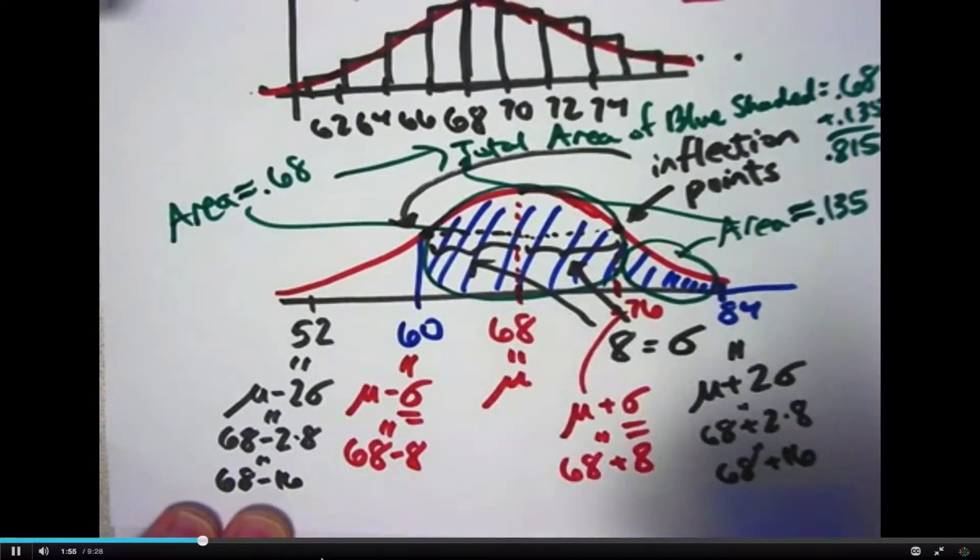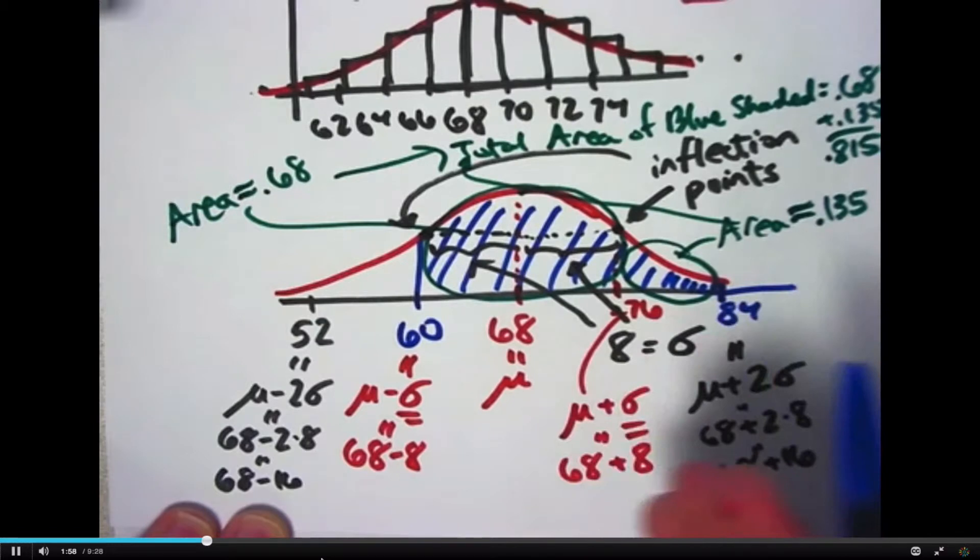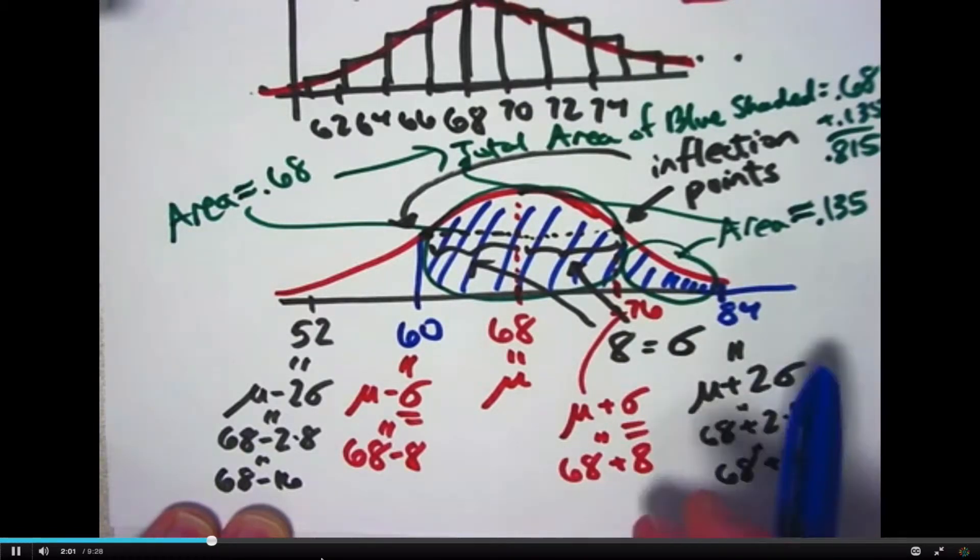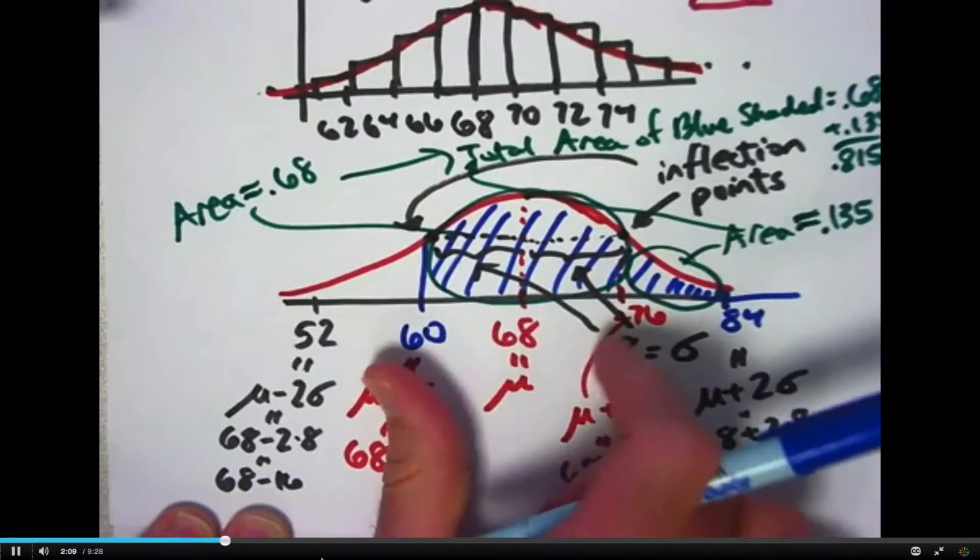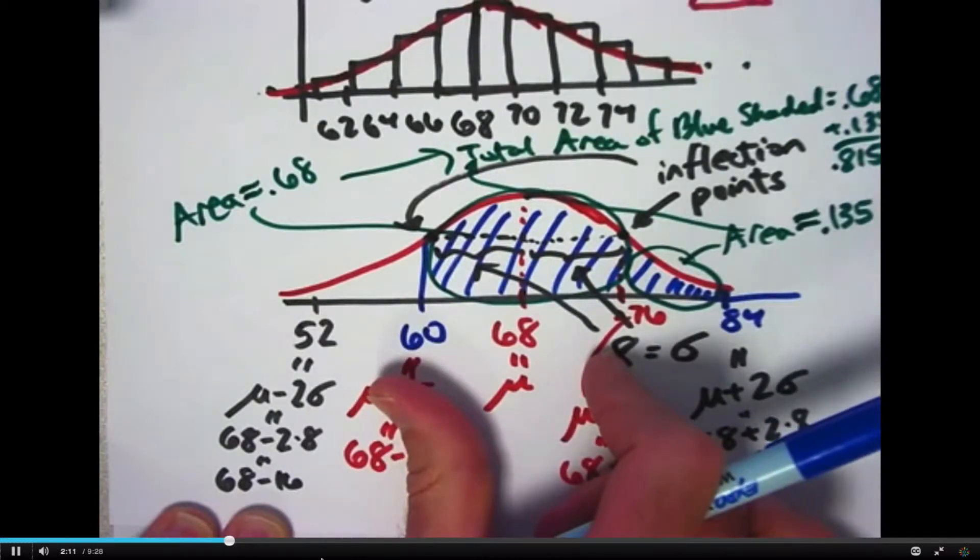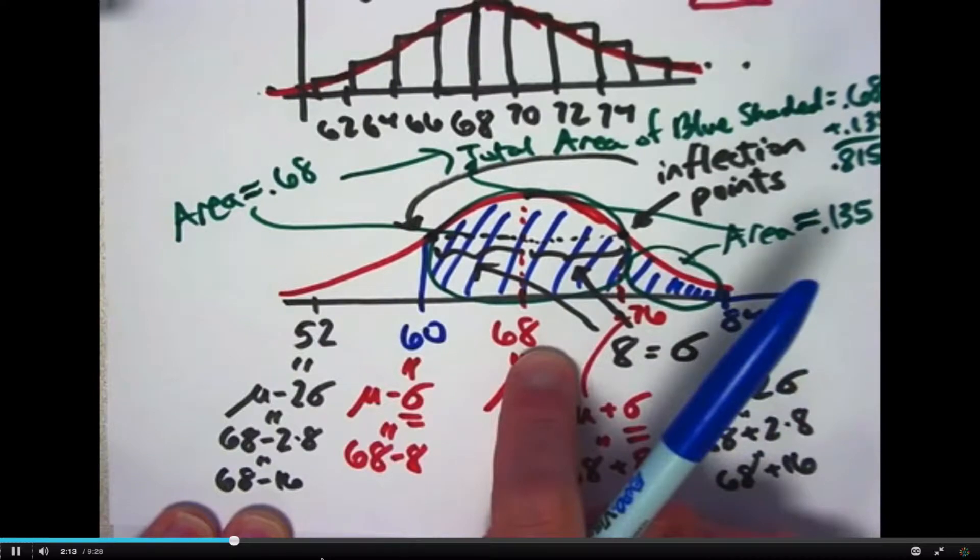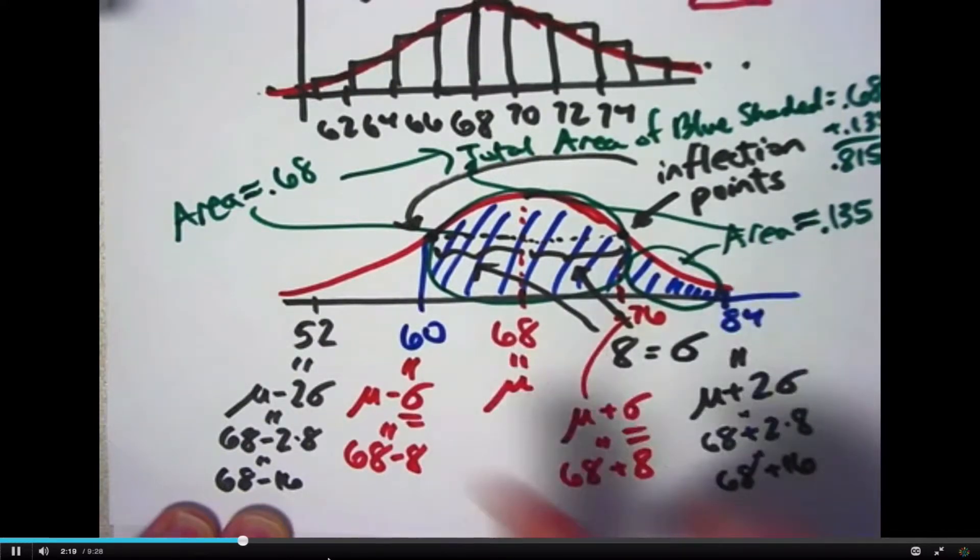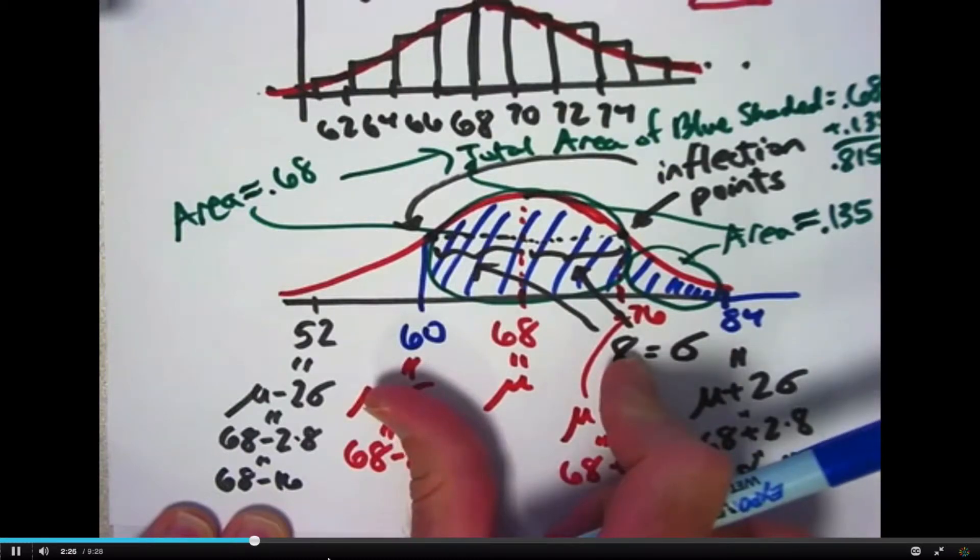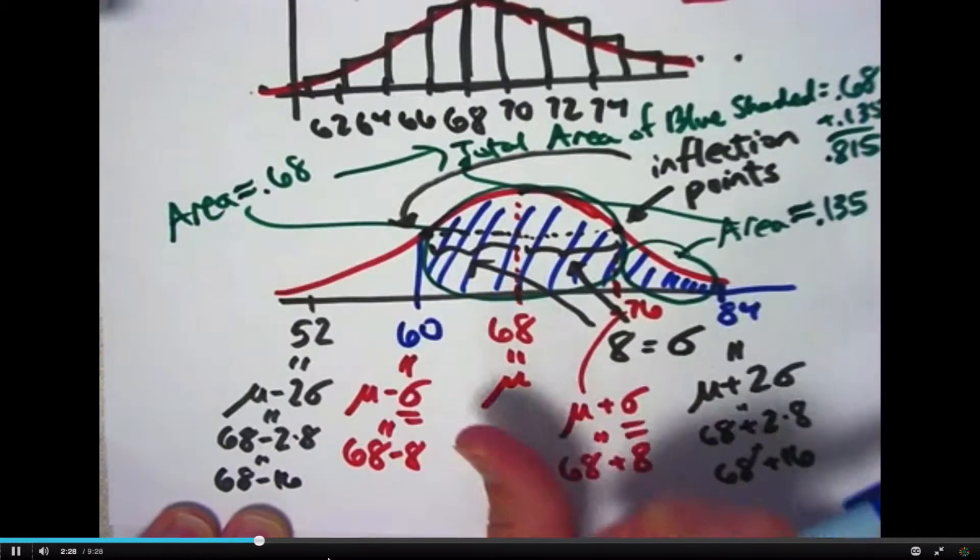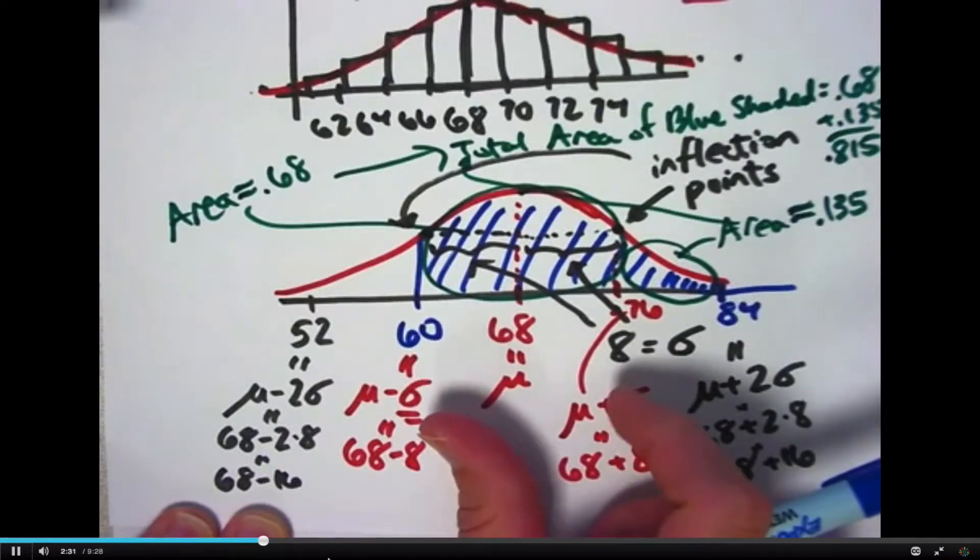It turns out there's something called this, ultimately this rule that I used in the last video is called the 68-95-99.7 rule, and it says that about 68% of the data, in other words about 68% of the area, is within one standard deviation of the mean. That 68 and this 68 have nothing to do with each other, by the way. This is just a coincidence that I happened to pick 68 there. It's the area that I'm referring to here in this 68-95-99.7 rule. To be within one standard deviation of the mean in this problem means to be between 60 and 76 for the beats per minute of your resting heart rate.